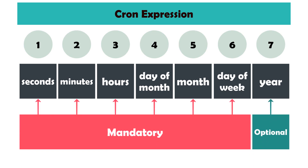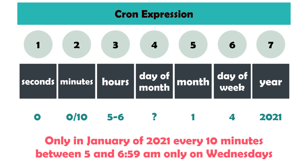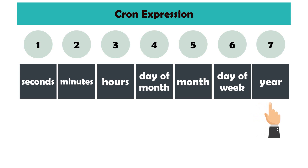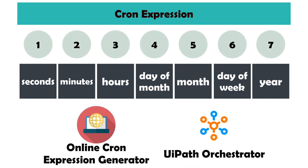All fields are required except for the year field — this can be entered but does not necessarily have to be. Here is an example of a cron expression, which means that in January of 2021 the bot should only run every 10 minutes between 5 and 7 a.m. on Wednesdays. I will explain this in detail so that at the end of the video you no longer have to use an online cron expression generator, but you can enter this directly in Orchestrator.